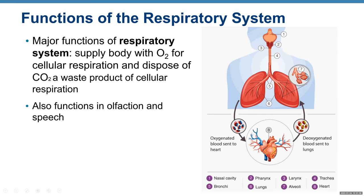The whole point of the respiratory system is to bring oxygen first to your lungs, then move oxygen from the lungs to the blood, and then blood delivers this oxygen to every single cell of your body. Every organ — your brain, kidney, liver, stomach, urinary bladder, muscles, bones — all receive oxygen. Oxygen enters your cells, and your cells use this oxygen to make ATP, the energy molecule.